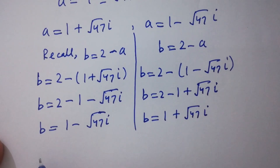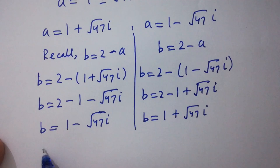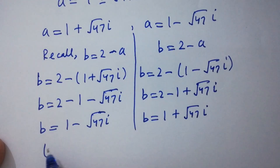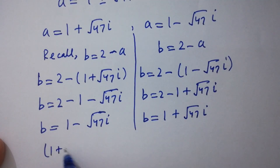So the values of a and b are: a equal to 1 plus square root of 47 i and b equal to 1 minus square root of 47 i, or vice versa.